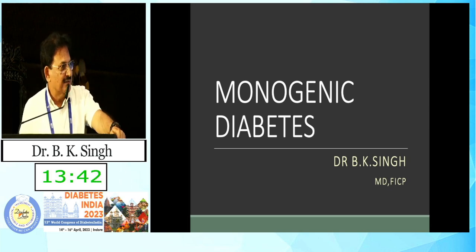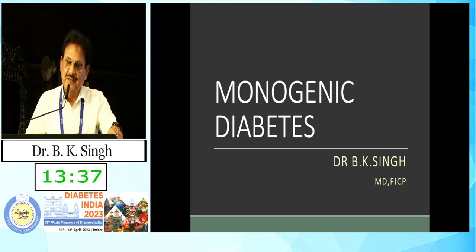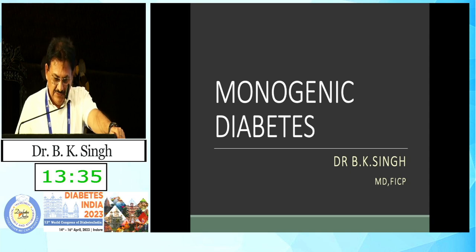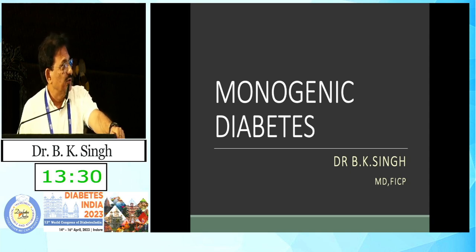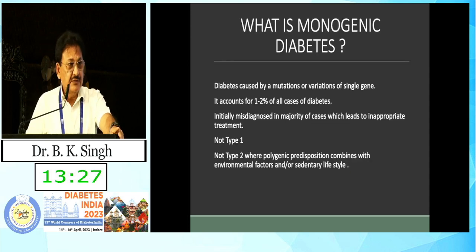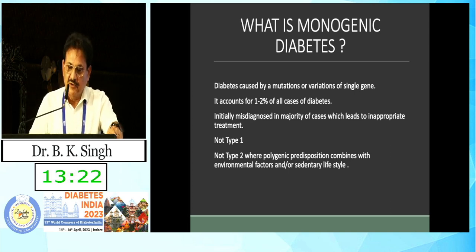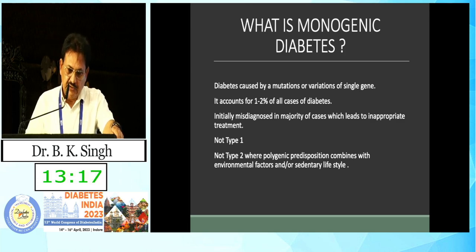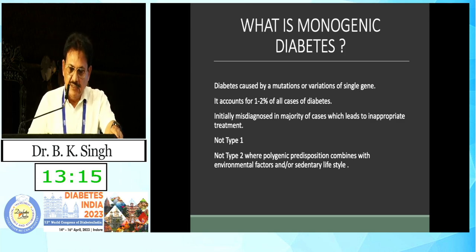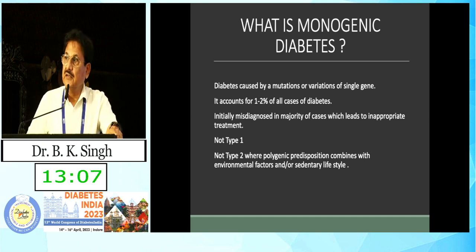Thank you, chairperson, and my pranam to Dr. Vinod Kumar. My topic is monogenic diabetes — an uncommon topic. Monogenic diabetes is caused by the mutation or variation of a single gene, and it accounts for nearly one to two percent of all cases of diabetes.